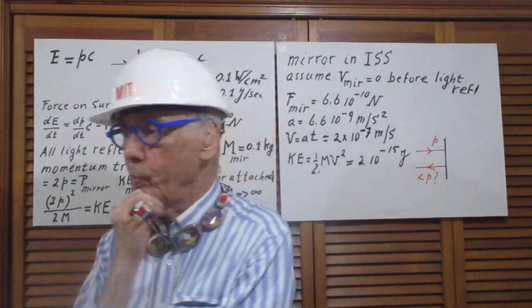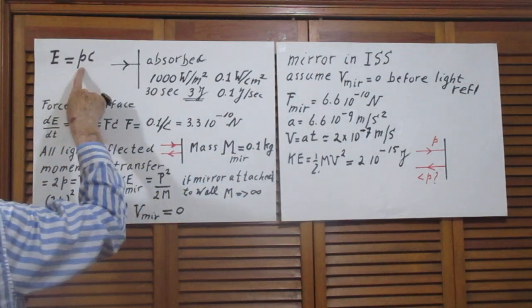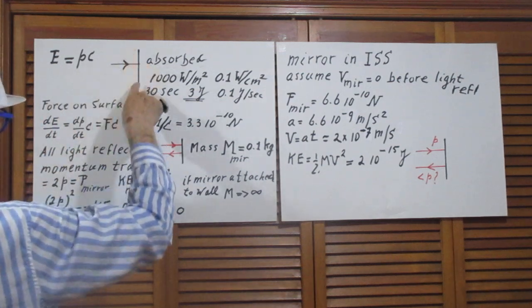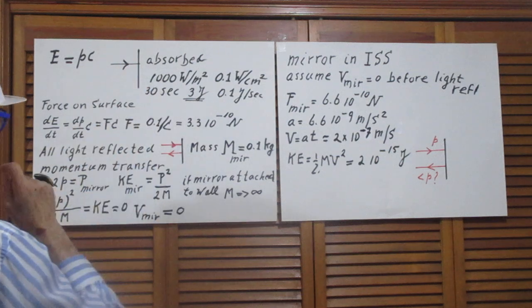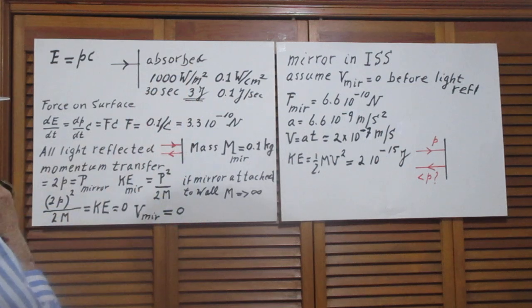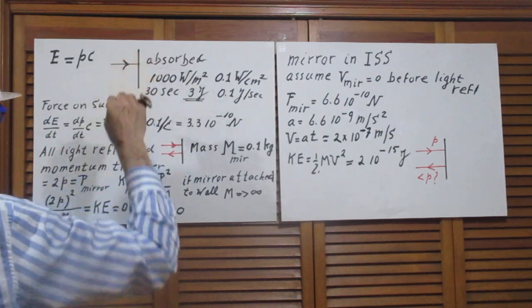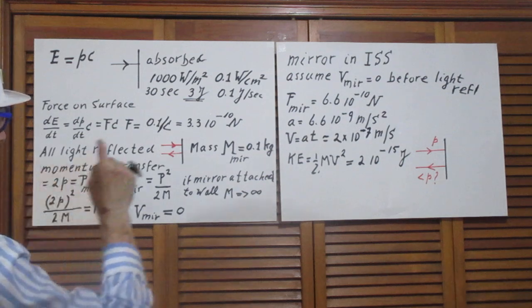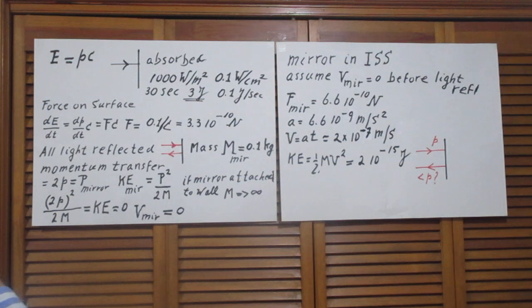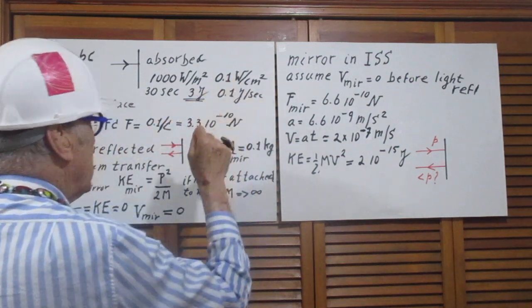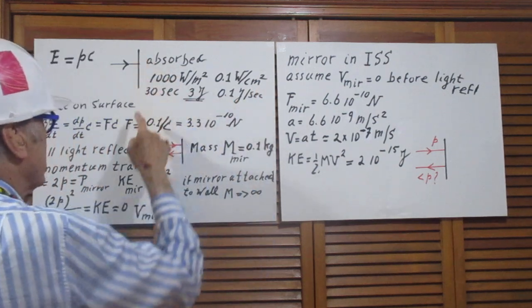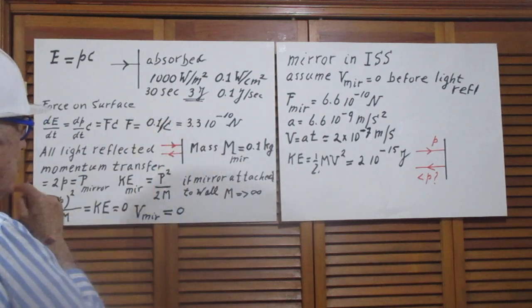The energy of a photon is PC. P is the momentum of the photon. Photons have no mass but they have momentum. The energy of a photon is the momentum times the speed of light. Light strikes a surface at wide angles. Let's assume it is sunlight which is about 1000 watts per square meter, but the area of our tube is only 1 square centimeter, so we have only a tenth of a watt per square meter.